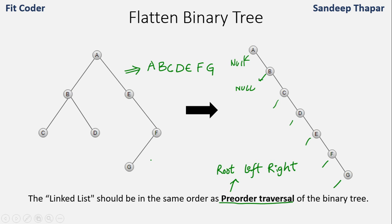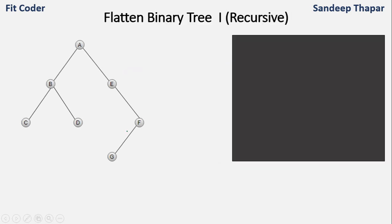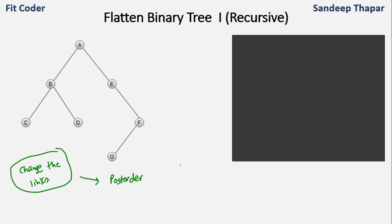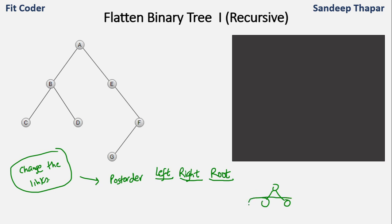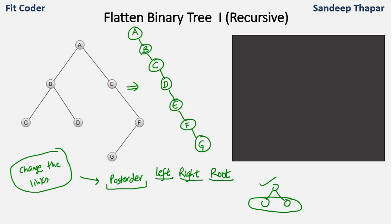First we'll discuss the recursive method. Whenever we have a question in which we have to change the links of the tree, our go-to choice of traversal is post-order traversal. In post-order, first we traverse left, then right, and at the last we process the root. Once the left and right are already processed, we can change the root node, which is convenient for bottom-up link changes. Usually for these kinds of questions, post-order is the obvious choice. But here all of the left nodes are null.